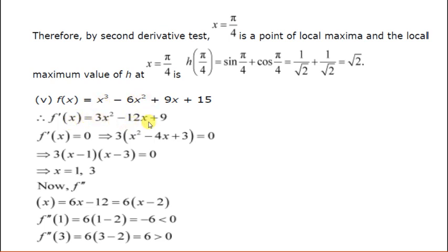First find f'(x). It is 3x² - 12x + 9. Now put this equal to 0. When you put it equal to 0, you can take 3 common. Then it becomes x² - 4x + 3 = 0. By middle term splitting, this becomes (x - 1)(x - 3). From this you get x = 1 and x = 3. So we got two critical points.